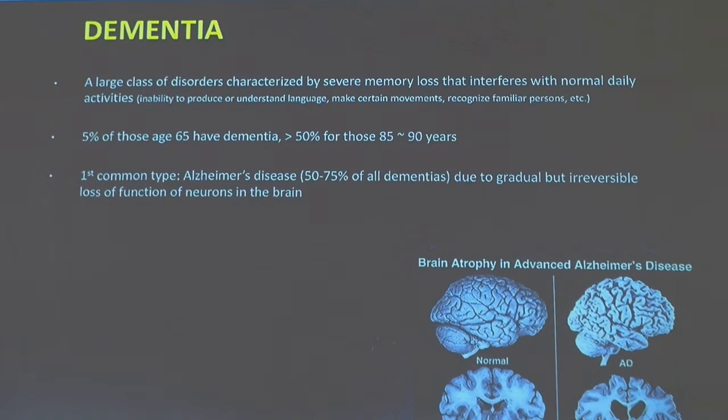Dementia is a more severe form of memory loss — it refers to a large class of disorders marked by memory loss so severe it interferes with normal daily activity. You may lose the ability to speak, make certain movements, or recognize familiar family members. About 5% of those aged 65 have dementia, and more than half of those aged 85 to 90 will have it. The most common type is Alzheimer's disease, accounting for 50 to 70% of all dementia cases, due to gradual but irreversible loss of neuron function. As you can see in this slide, the Alzheimer's brain shows significant tissue loss compared to a healthy brain.